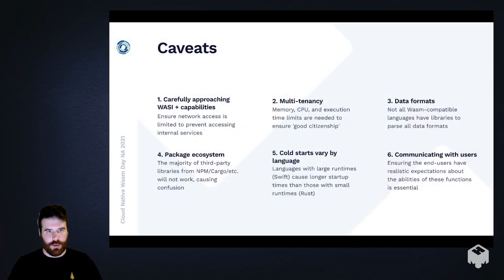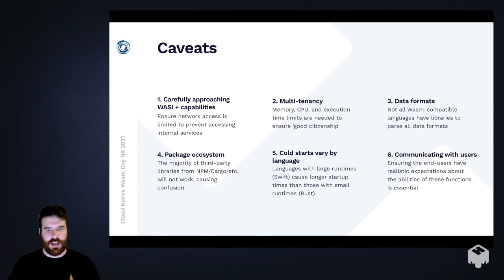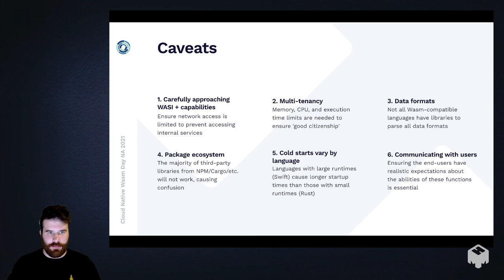To close out, let's briefly cover some caveats and things to think about if you're considering setting this up for your users. The first is that you need to be careful about WASI — the WebAssembly System Interface — and the capabilities provided by your WebAssembly runtime, because you want to make sure you are locking these functions down. Malicious code is definitely rampant these days, so the declarative configuration example I showed is something you need to take seriously. Think about your threat profile and what you want to protect against when configuring the WebAssembly runtime.